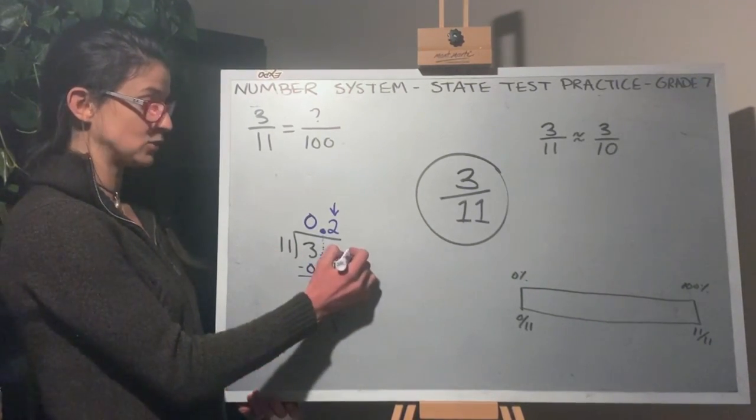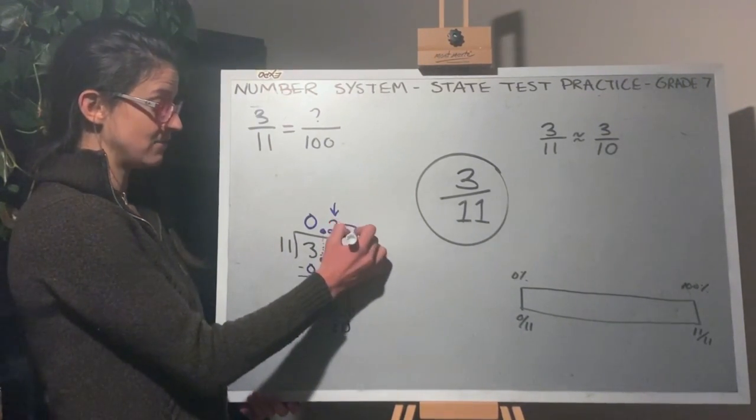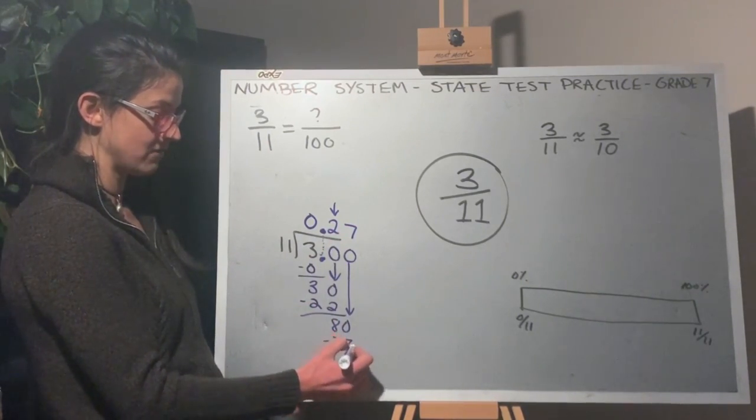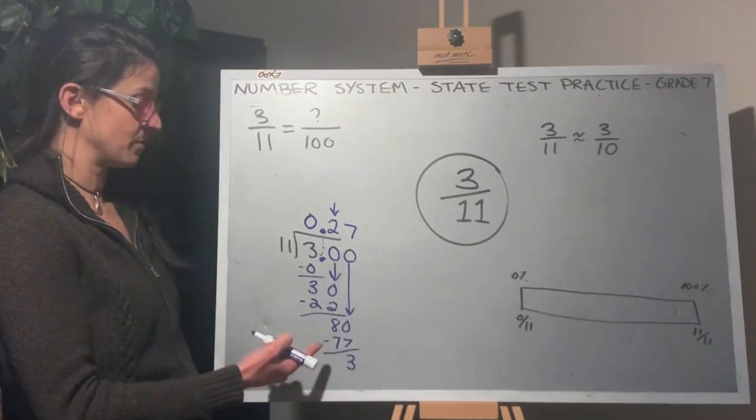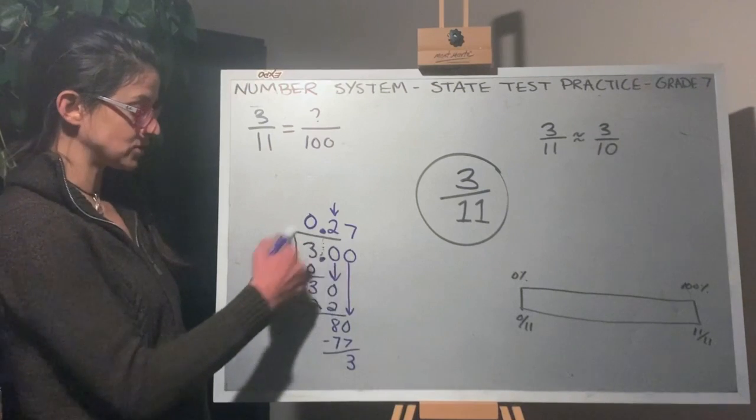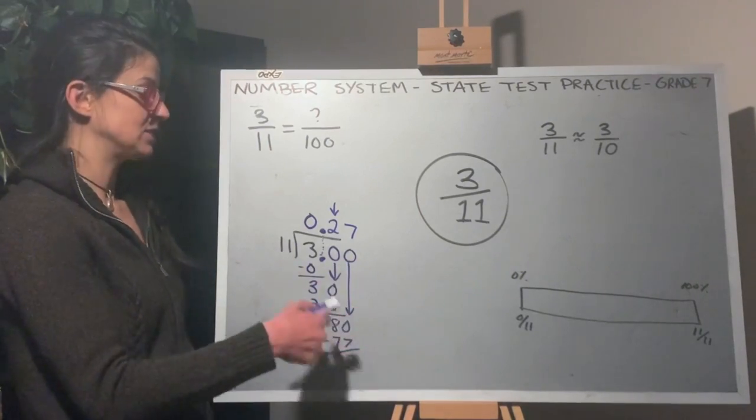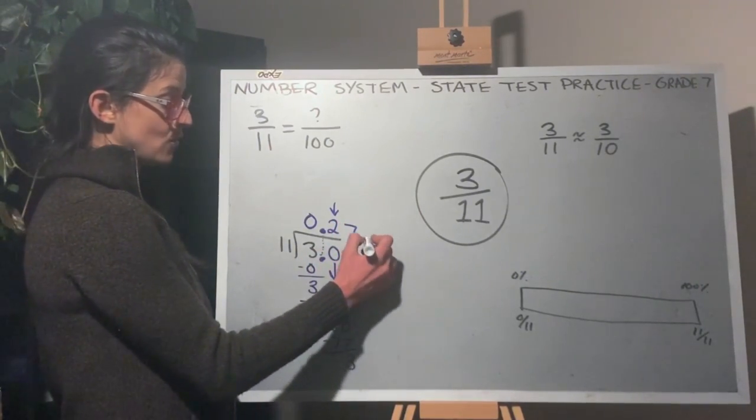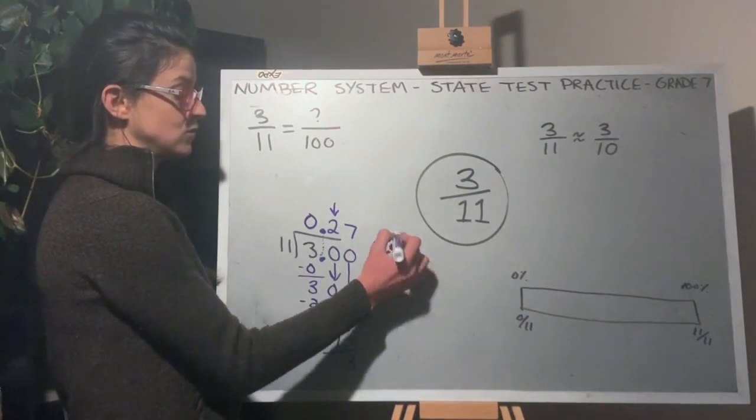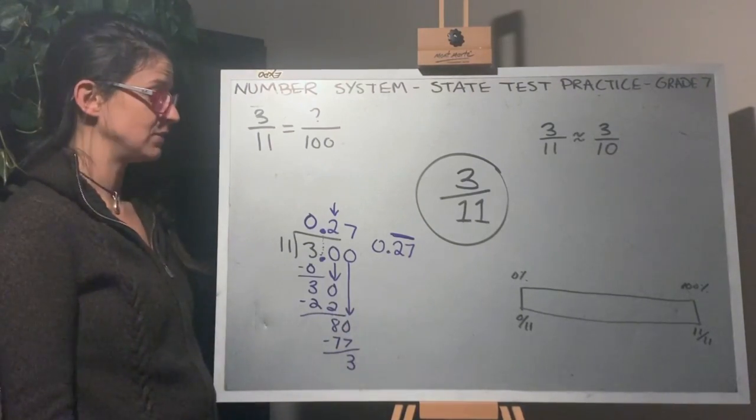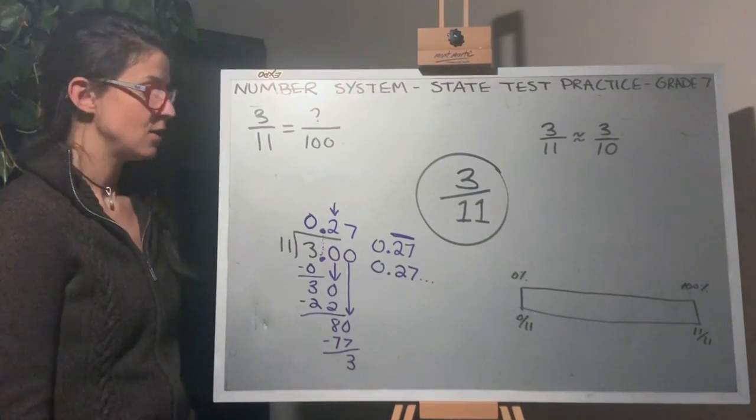11 does not go into 8, so I bring down another placeholder 0. 11 goes into 80 seven times. 7 times 11 is 77. I get 3 again. I'm starting to think that this is going to form a pattern. If I subtract 22 away, I'll get 8 again, and then 11 goes into 8 seven times. So yes, this will start repeating. I have a repeating decimal 0.27 repeated. I can use this hat to indicate that the 27 is repeating, or I can use an ellipsis.